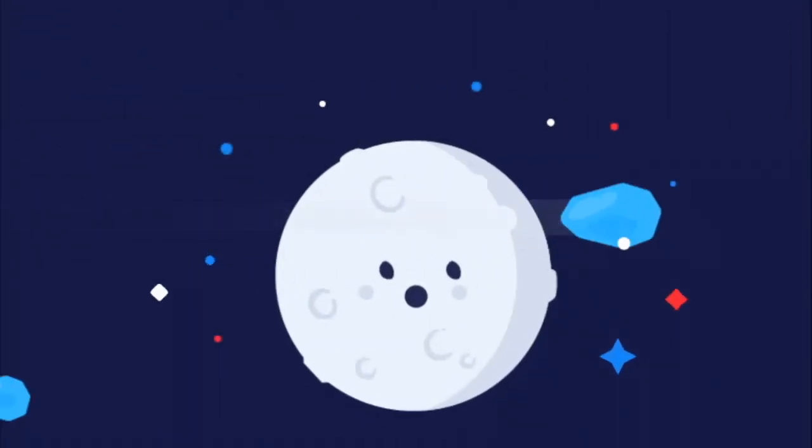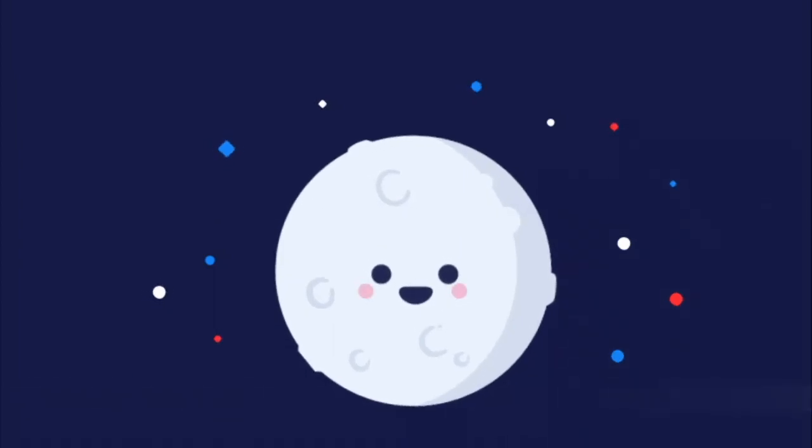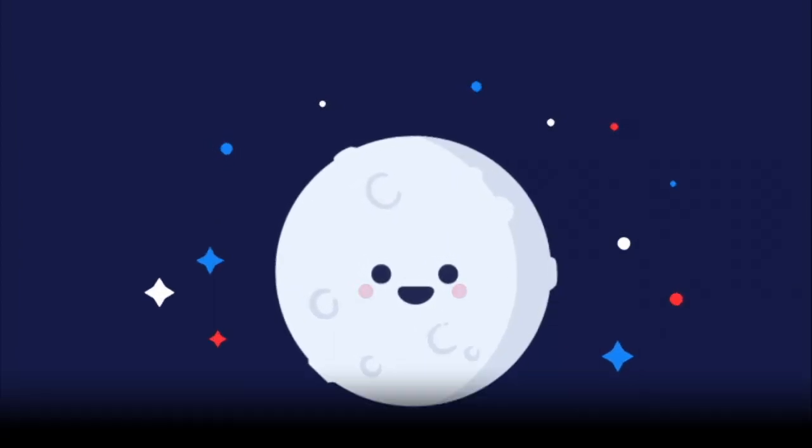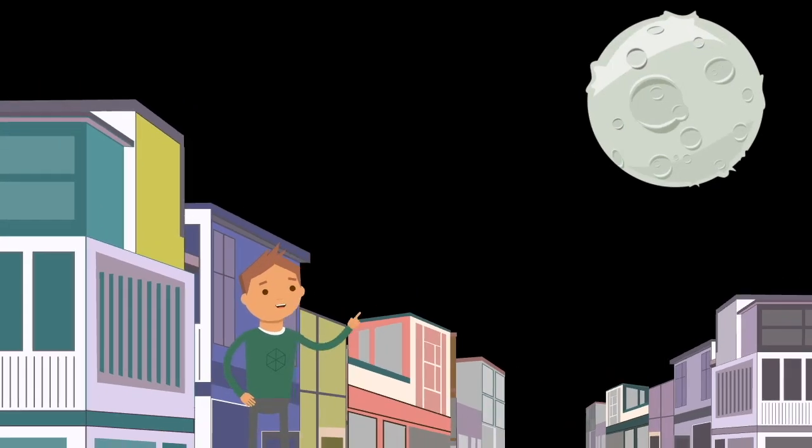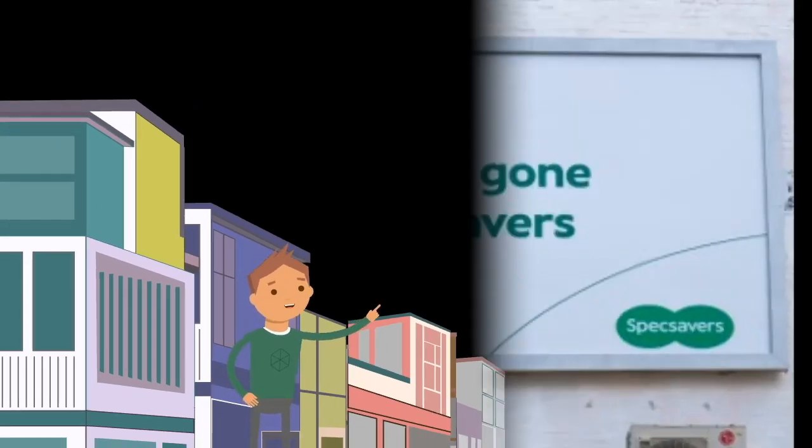Speaking of aiming, the moon's been a target for meteors for ages. That's why it's got so many craters. Some are so huge we can even spot them from here on Earth, and that's without the help of Specsavers.